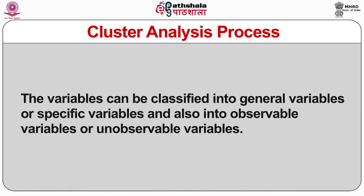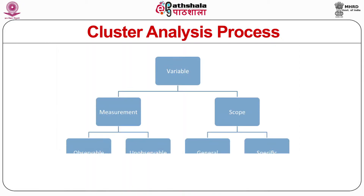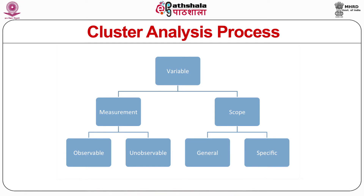The variables can be classified into general variables or specific variables, and also into observable and unobservable variables. General variables refer to culture and demographic variables, while specific variables refer to usage frequency, brand loyalty, etc. Observable variables refer to those which can be measured, for example usage frequency. Unobservable variables are those which need to be inferred and cannot be measured directly, for example personality values.